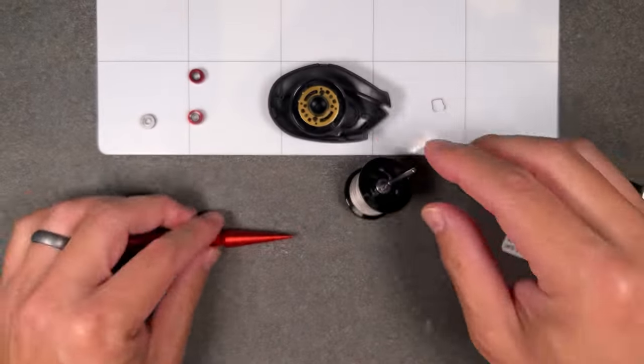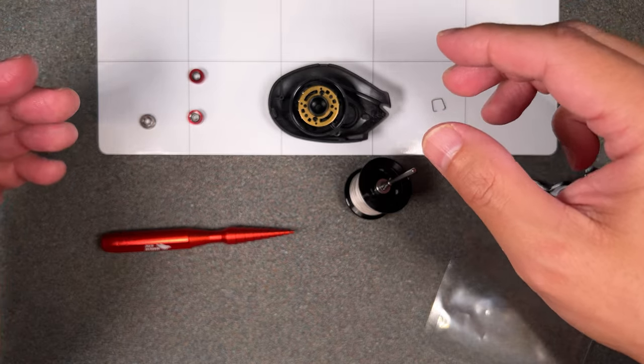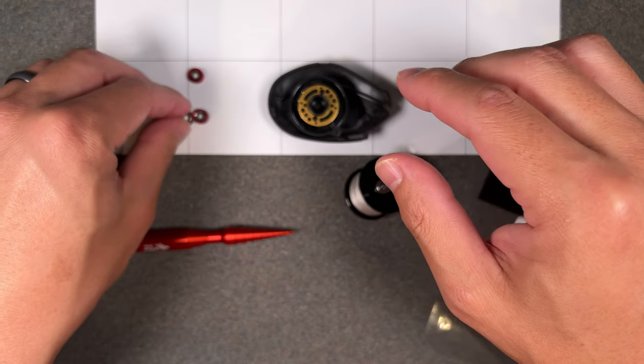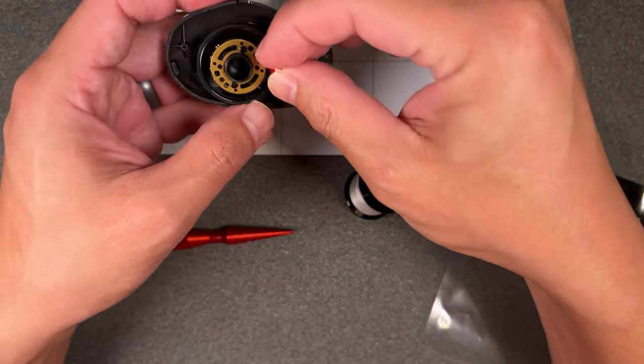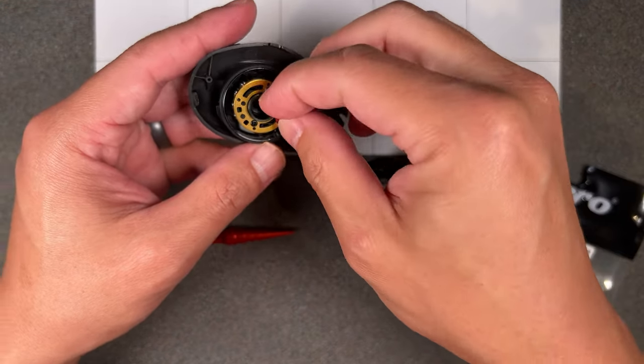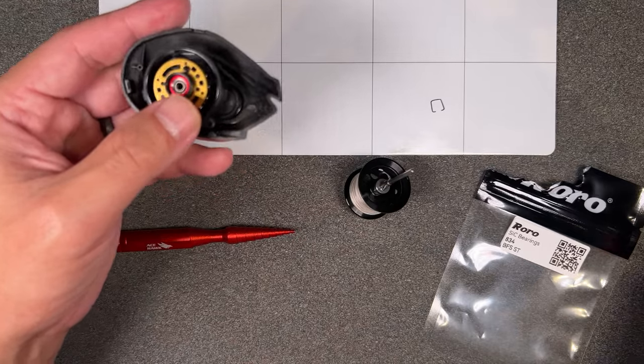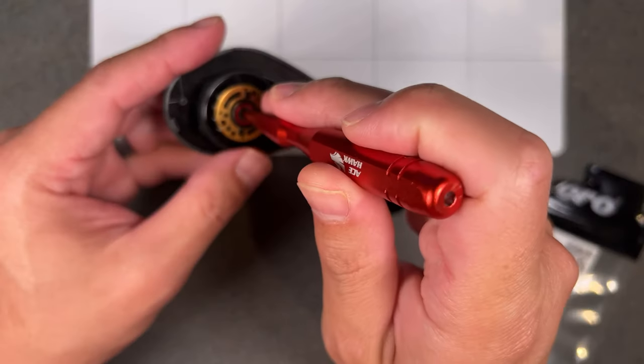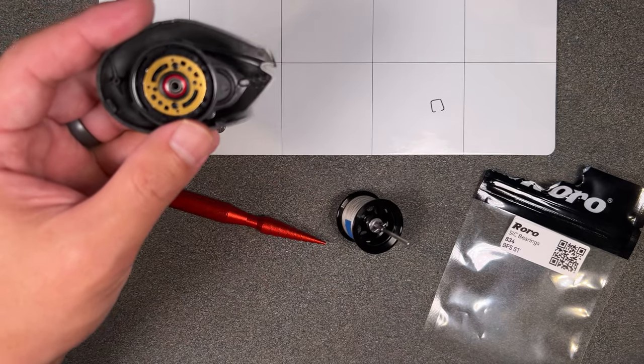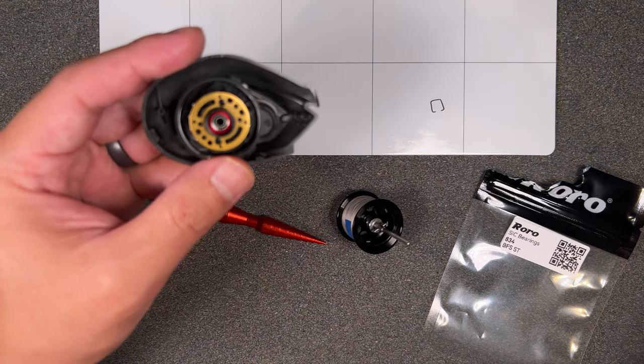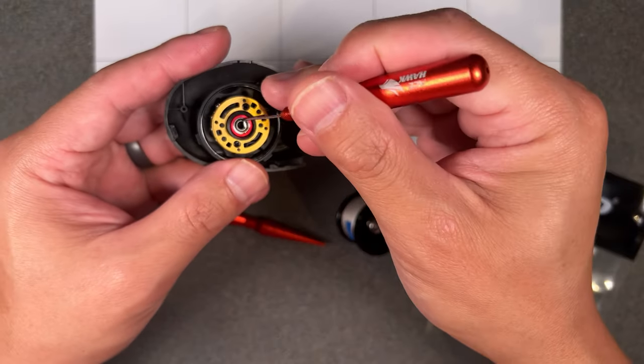But you can kind of hear that it's actually a lot quieter than the Roro bearing. And so I wanted to do a test to see which bearing might perform quote-unquote better. So I'm going to go ahead and put the Roro bearing into the end cap.